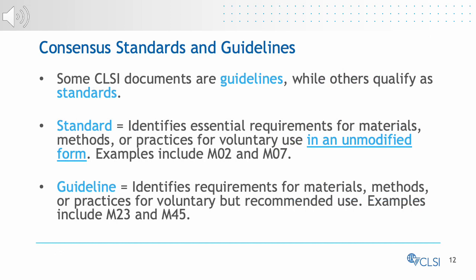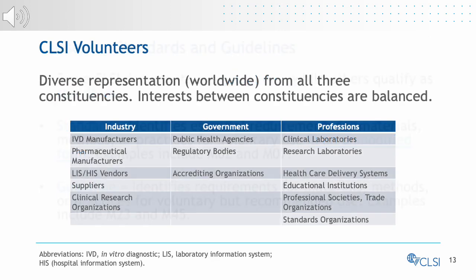Some CLSI documents are guidelines, while others qualify as standards. Standards identify essential requirements for materials, methods, or practices for voluntary use in an unmodified form. Guidelines identify requirements for materials, methods, or practices for voluntary but recommended use. CLSI aims to achieve a diverse volunteer pool with appropriate representation from interested constituencies affected by our standards and guidelines. The constituencies are made up of industry, government, and professions, and here you can see some examples of each type of organization. These organizations not only represent CLSI's membership, but also CLSI's volunteer base.